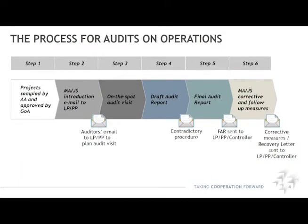The whole process for audits on operations can be divided into the following steps. First, the projects are sampled by the audit authority and approved by the GOA members. After that, the MAJS sends an introduction email to the lead partner and all project partners included in the sample. The selected lead partners and project partners are then contacted by the auditors via email to plan and agree on a date for the audit visit. Next, an on-the-spot check is carried out by the auditors on the premises of the partner institutions. After that, a draft audit report is sent by the audit firm and the contradictory procedure with the audited beneficiaries starts. Once the contradictory procedure is concluded and the draft audit report becomes final, it is sent to the lead partner, project partner, and the national controller. The MAJS then performs corrective and follow-up measures based on the final audit report.